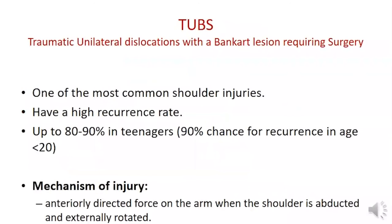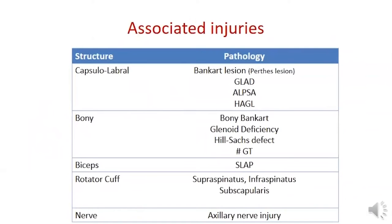Traumatic unidirectional instability is one of the most common shoulder injuries with a very high recurrence rate — up to 90% chance of recurrence in patients aged 20 years old. The mechanism of injury is an anteriorly directed force on the arm when the shoulder is in abduction and external rotation. It is very important to understand the pathology commonly associated with anterior glenohumeral instability to appropriately address these lesions when diagnosed.